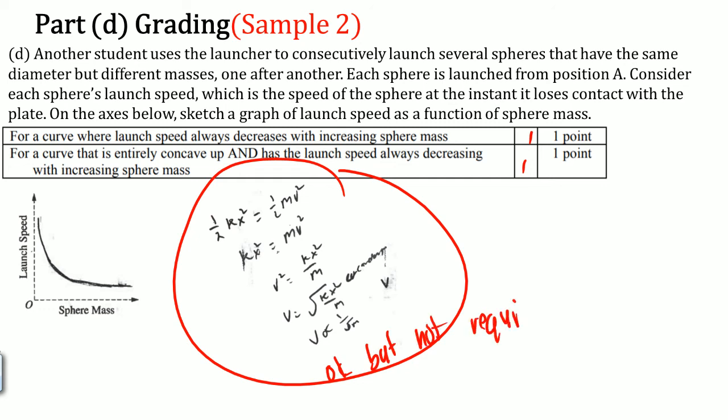The second sample earns both points because it shows the correct graph shape. Some students show math alongside the graph — this is acceptable but not required. It helps explain why the curve goes down, because of the square root relationship. That's how the graph should look. That covers how this typical experimental design question is graded from the grader's point of view.